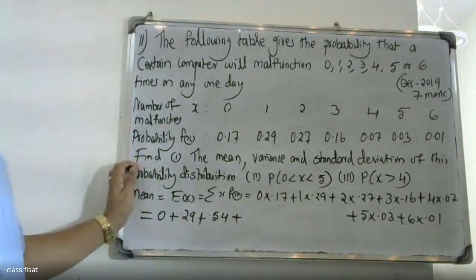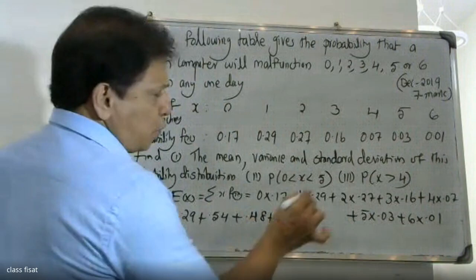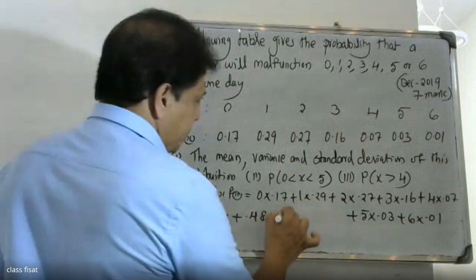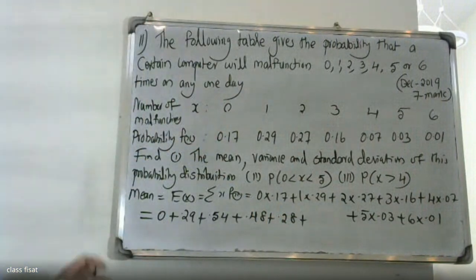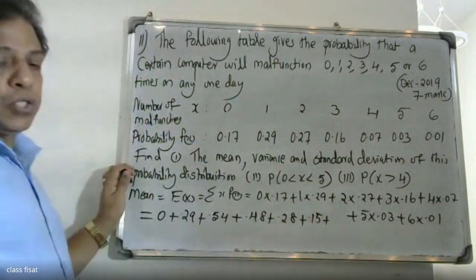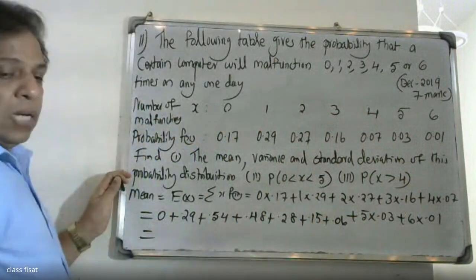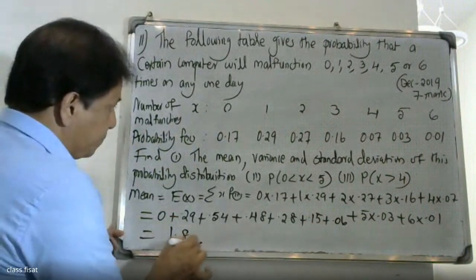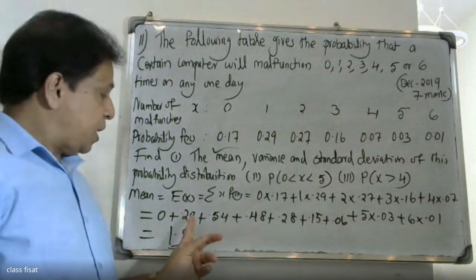Continuing: 3 into 0.16 = 0.48, 4 into 0.07 = 0.28, 5 into 0.03 = 0.15, 6 into 0.01 = 0.06. Summing all these values gives E(X) = 1.8.